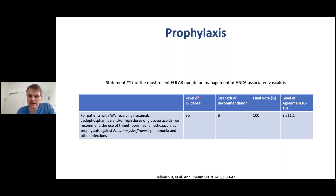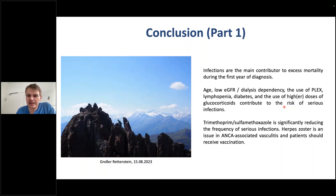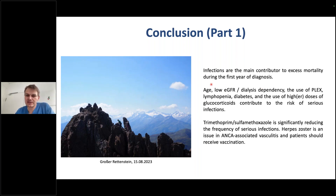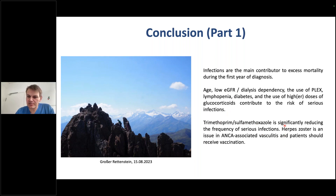This has been incorporated as statement number seven in the recent EULAR update on management of AAV: for patients with AAV receiving rituximab, cyclophosphamide, and/or high doses of glucocorticoids, we recommend the use of TMP-SMX as prophylaxis against Pneumocystis jirovecii but also other infections. There is a lower level of evidence and low strength of recommendation, but high level of agreement. In conclusion: infections are the main contributor to excess mortality, especially during the first year of diagnosis. Key risk factors include age, low eGFR, lymphopenia, diabetes, and higher doses of glucocorticoids. TMP-SMX is significantly associated with reduced risk of serious infections, and Zoster vaccination should not be forgotten.